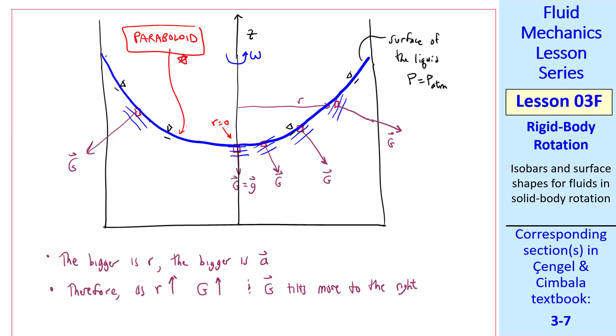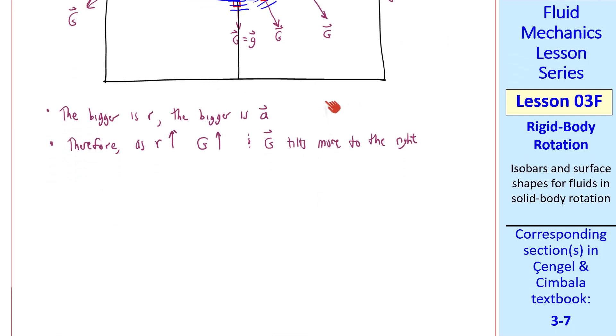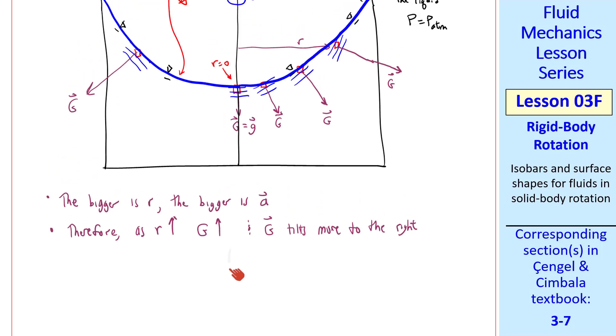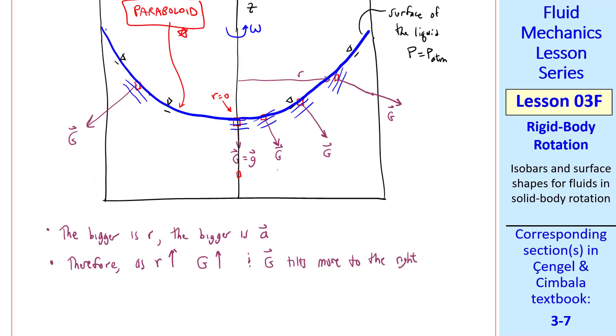When you do the math, this surface is the shape of a paraboloid, which is a parabola that is rotated around in a circle. That's called a paraboloid. This free surface is also an isobar, since it's a surface of constant pressure. What about other isobars? Well, we haven't said anything about the depth of the fluid element that we're examining, so we could repeat this analysis for fluid particles at any z and r location. It turns out that the isobars are also paraboloids. They're just lower in the tank.